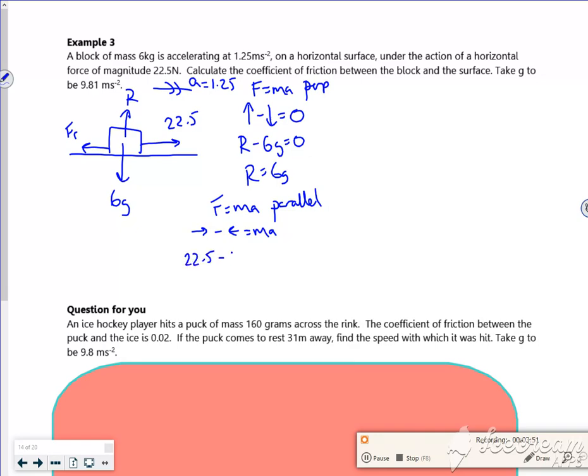So 22.5 minus friction is equal to mass of 6 times by 1.25. So my friction, if I do this little rearrange, I've got 22.5 minus 6 times 1.25 is going to be equal to friction.